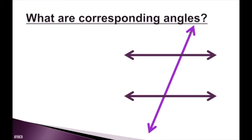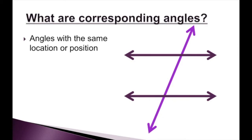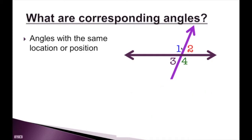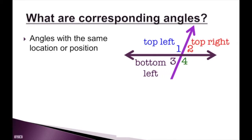So what are corresponding angles? Corresponding angles are angles with the same location or position. When we have our transversal cutting through those parallel lines, it creates groups of angles — a group of four angles here and a group of four angles here. Each of those angles has a position. Angle one is the top left, angle two is the top right, angle three is the bottom left, and angle four is the bottom right.